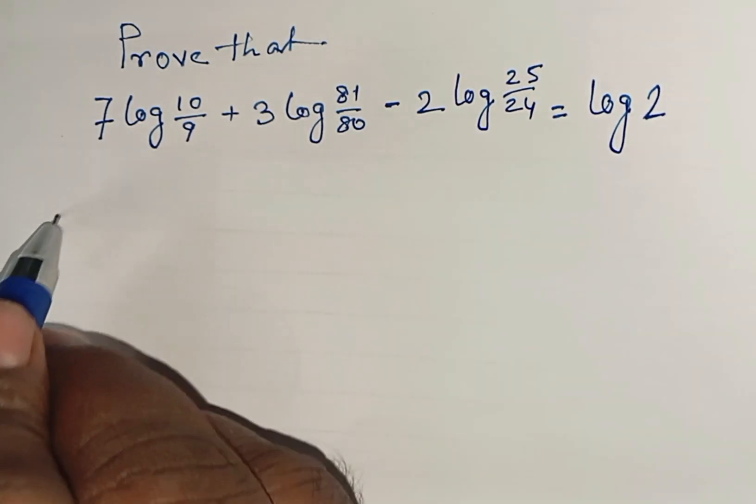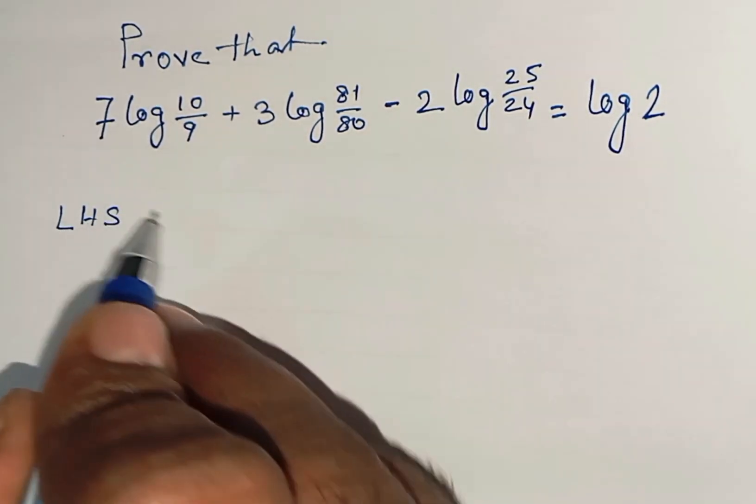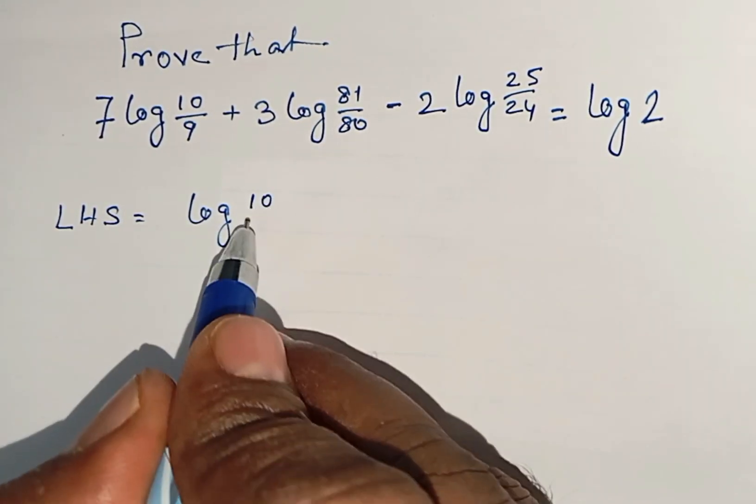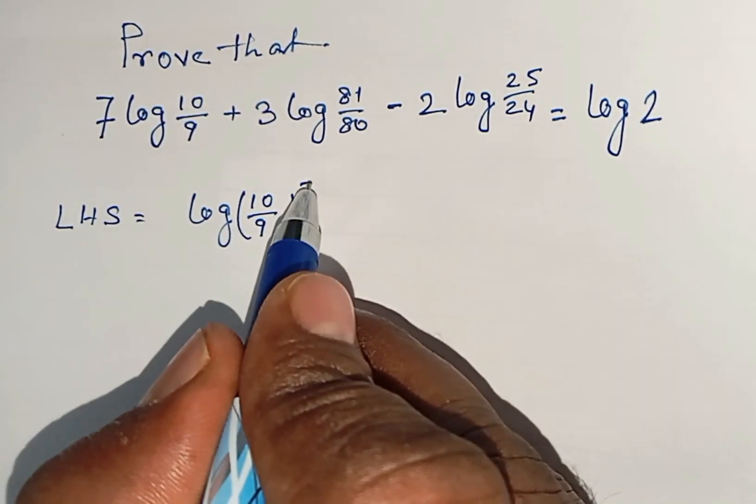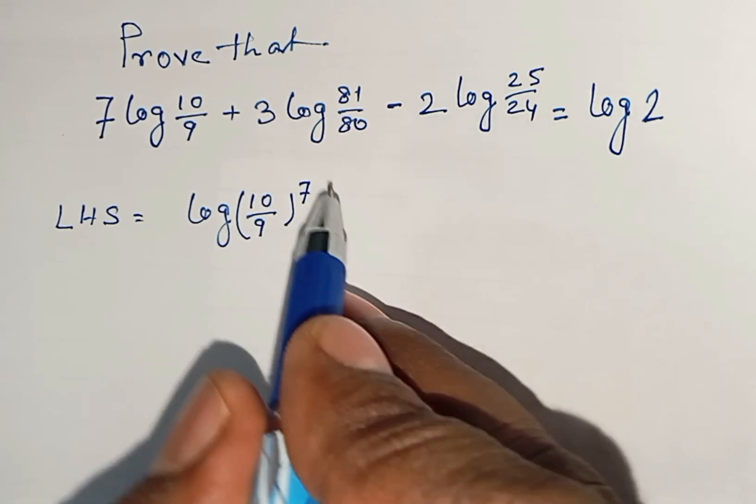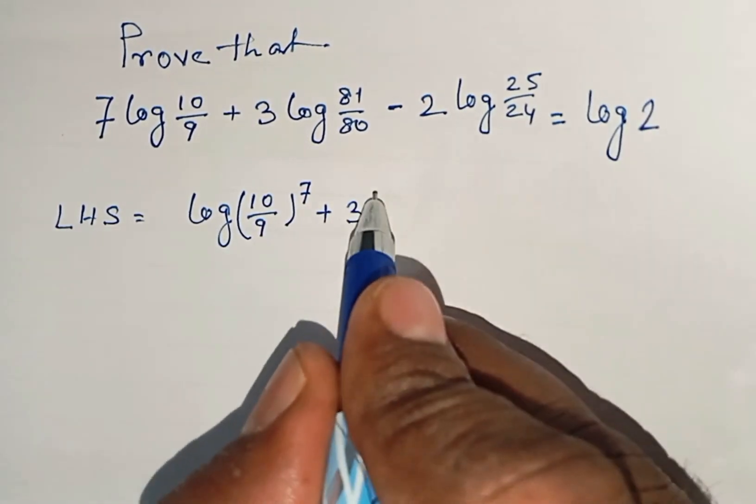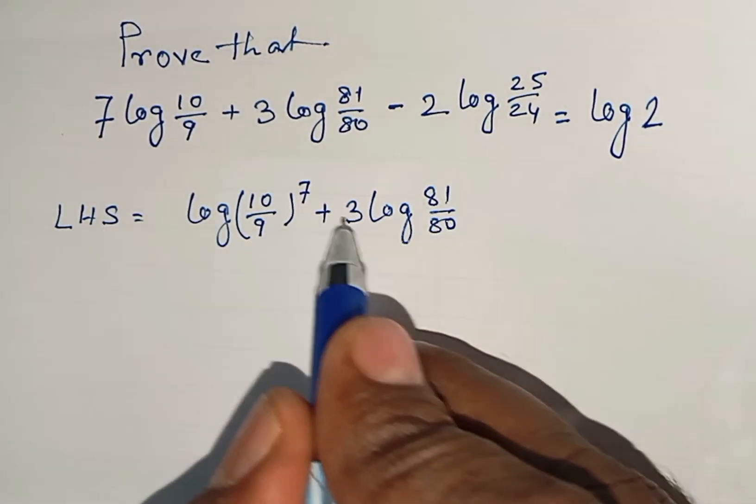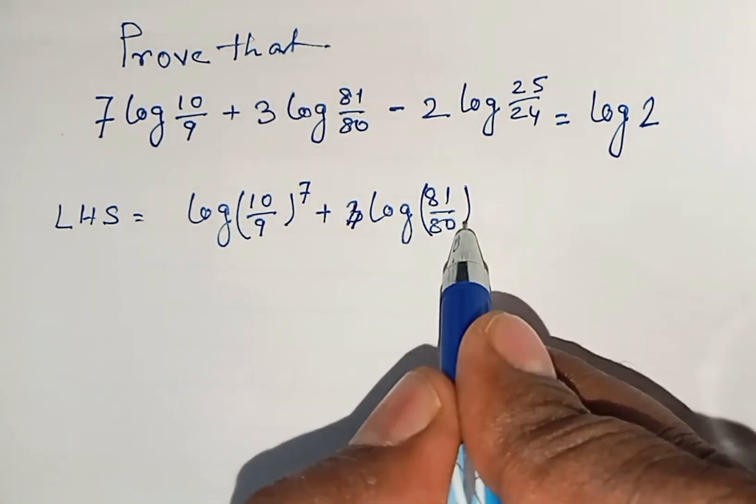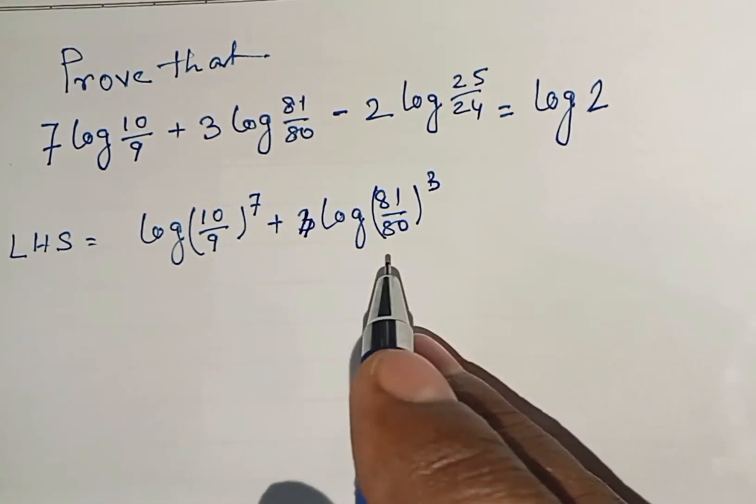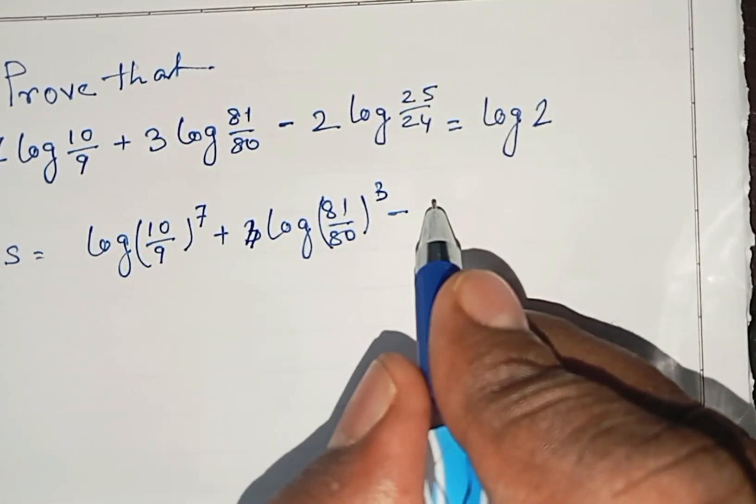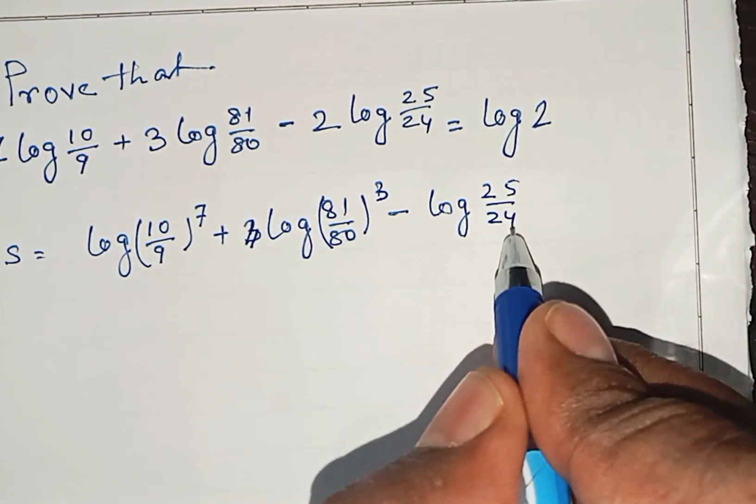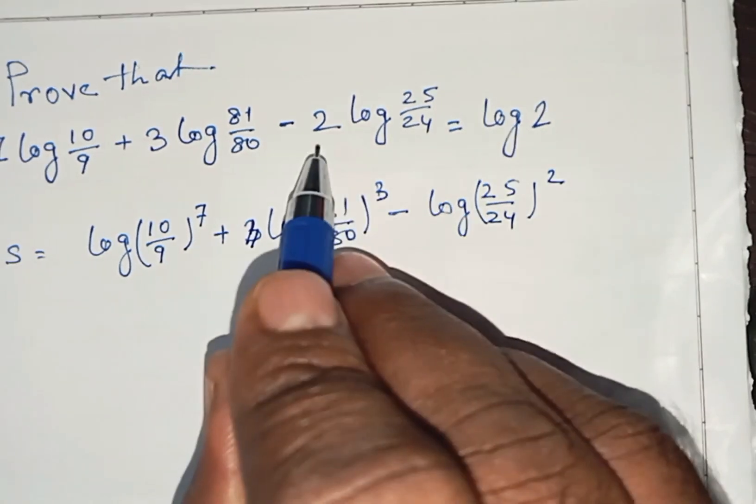So, left hand side if we write that equals what? Log of 10/9 to the power 7, as 7 multiplied here, so it will be a power, plus 3 log 81/80, so we can write to the power 3, minus log of 25/24 square, as 2 is given here.